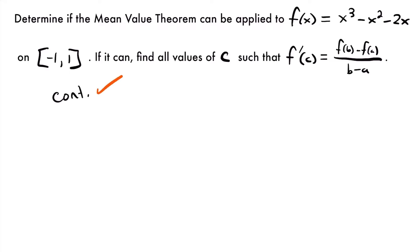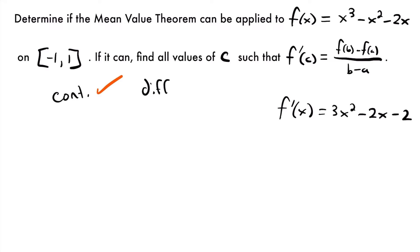So we checked continuity. Then we want to check differentiability. To do that we'll take the derivative of our function. We'll have f prime of x is equal to 3x squared minus 2x minus 2, using the power rule for each of these terms. And just like our original function, our derivative is a polynomial, which means it's going to be continuous on our interval. So since this derivative is continuous on this interval, we can say that the original function is differentiable on the interval. Remember, differentiability is just the continuity of the derivative.